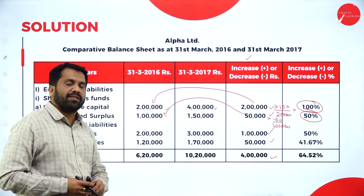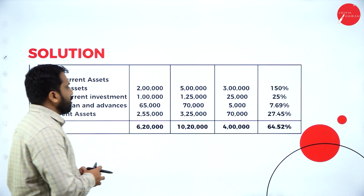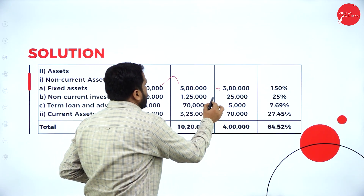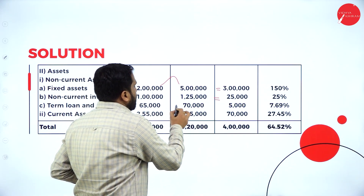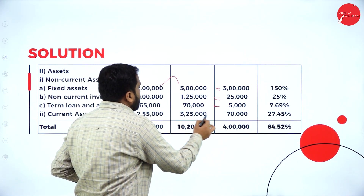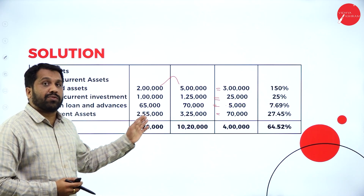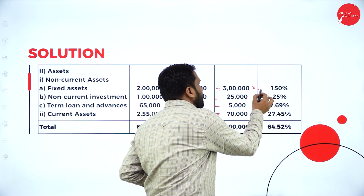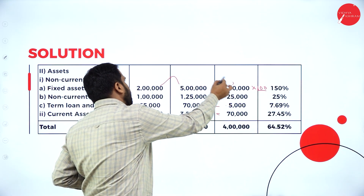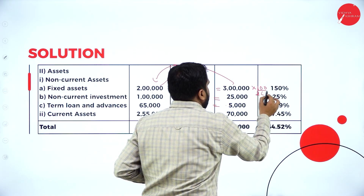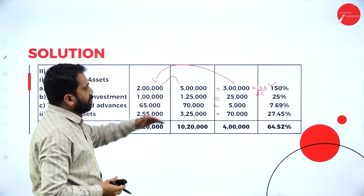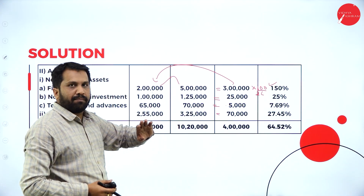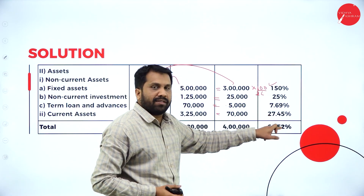This is called your comparative balance sheet. Similarly, your assets also. 2 lakh and 5 lakh — the difference is 3 lakh. Finding differences for all items: 65 minus 70 is 5, and 2 lakh 55 minus 3 lakh 25 is 70. Once the difference is found, calculate: 3 lakh into 100 divided by your first value of 2 lakh — you will get 150%. Other percentages come to 25%, 7.69%, and 27.45%. Remember, this is not a total of percentages — that is very important.